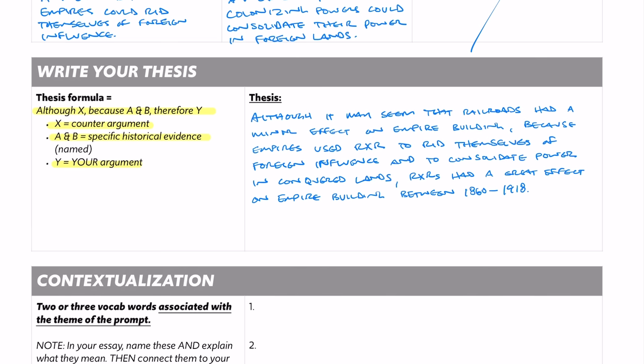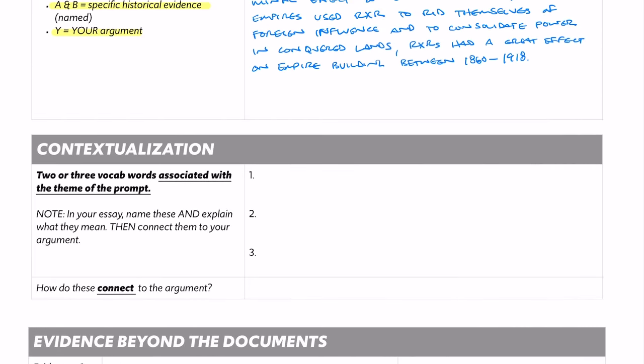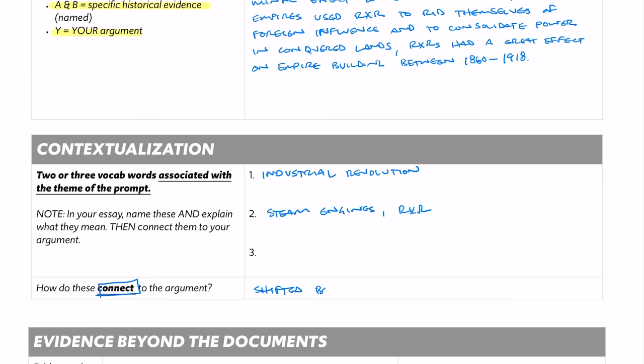Now let's move to contextualization. When I'm thinking about railroad building in this time period and empire building, it makes me think of the Industrial Revolution. I'm going to put that down and name further evidence in that context, like the advent of steam engines and the advent of railroads. The key question is: how do these connect to the argument? That's the point most people miss on contextualization. In this case, the Industrial Revolution, steam engines, and railroads had the effect of shifting the balance of power from Asia to the West.